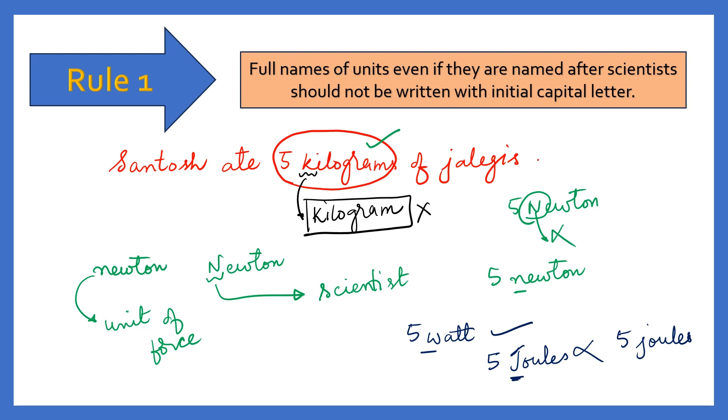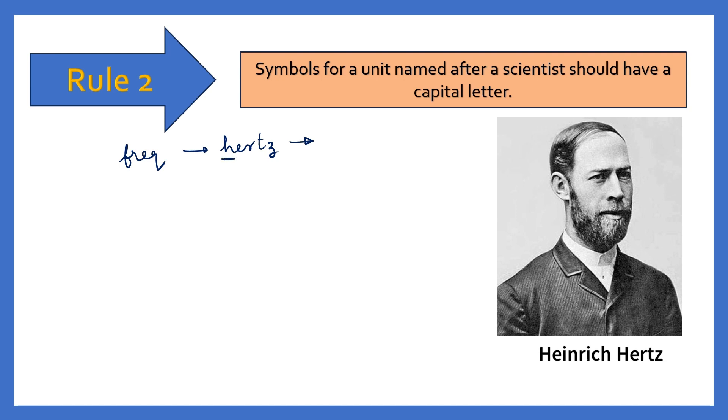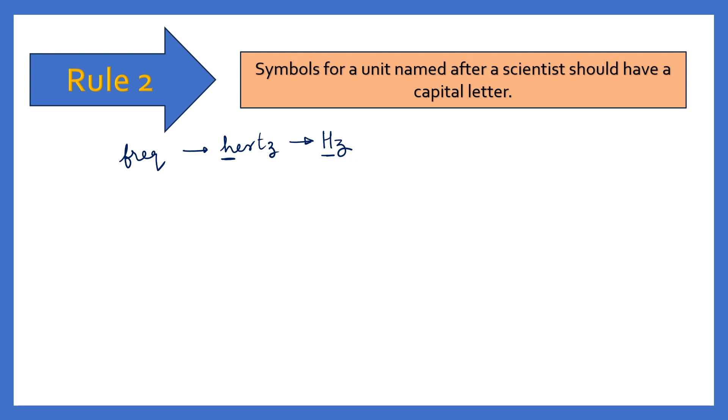I hope you have understood. So let's go to the next rule. Rule number two: symbol of units named after a scientist should have capital letter. Some symbols are named after some scientist in order to give them respect. For example, frequency. The unit for frequency is hertz. So when I write this symbol, hertz is name of a scientist. See I have written h small letter. It is derived from name of a scientist, hence Hz, H must be capital. Our favorite example newton. So newton is unit for force. And when I write the symbol of SI unit I will write it as capital N.